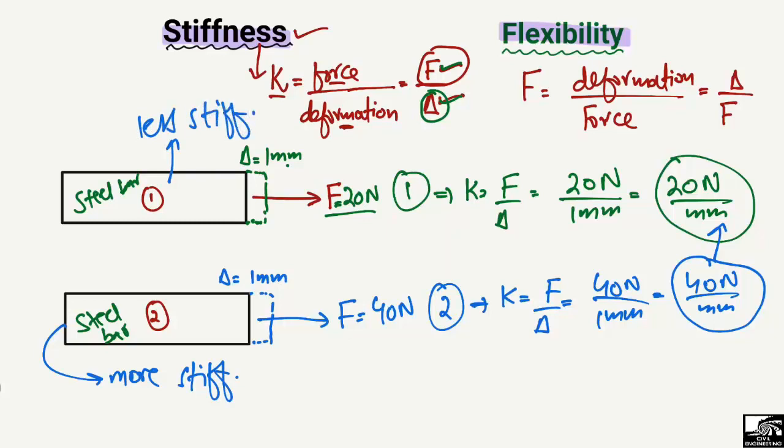This shows the amount of load that can be applied to produce a unit deformation in an object. This is known as the stiffness of the material. Now let's move on to flexibility.